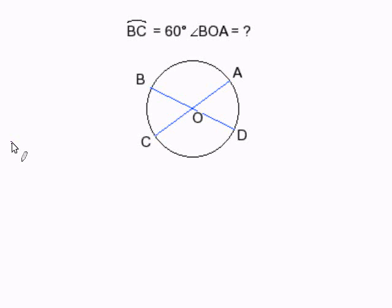The first thing you need to do is recall that this degree measurement here is equivalent to the angle degree here. So if this is 60 degrees here, then that means this angle here is 60 degrees.